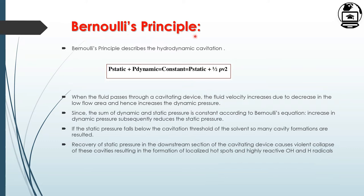Bernoulli's principle describes hydrodynamic cavitation. The static and dynamic pressures are constant according to this principle, and the dynamic pressure equals half of rho v squared. The static pressure p-static and dynamic pressure p-dynamic are related by this equation, where rho and v are the density and velocity of liquid at the throat of the cavitating device. When the fluid passes through the cavitating device, the fluid velocity increases.